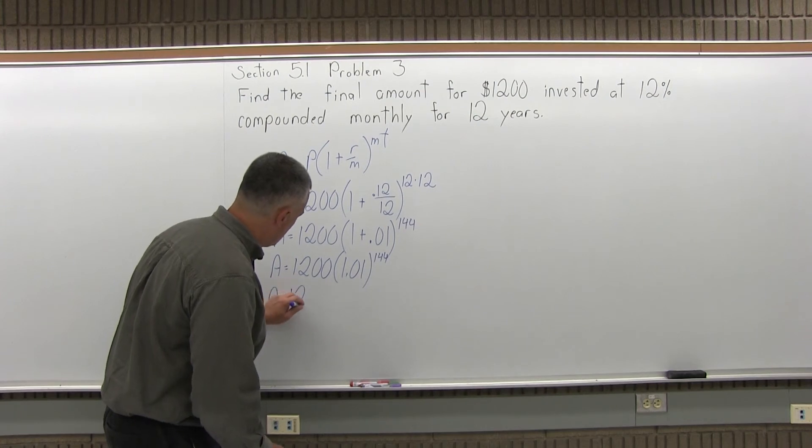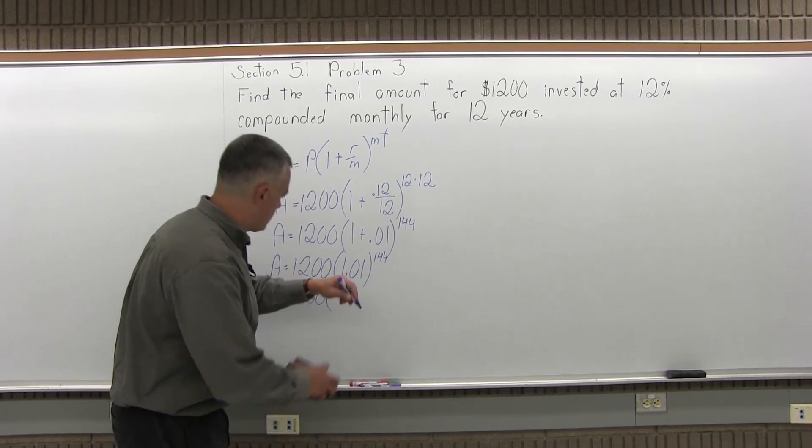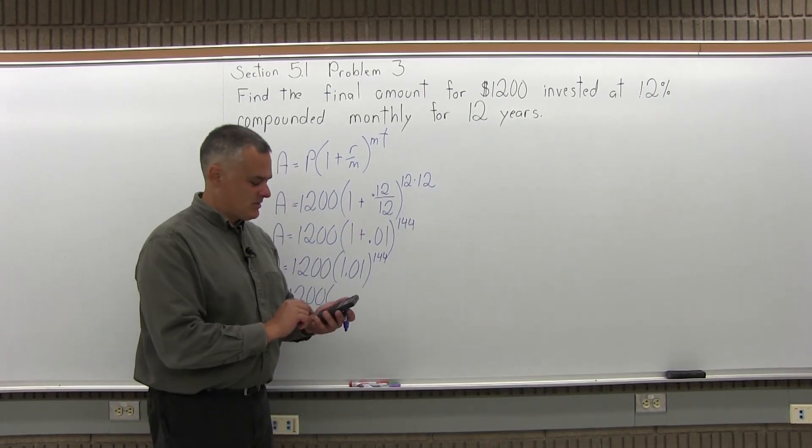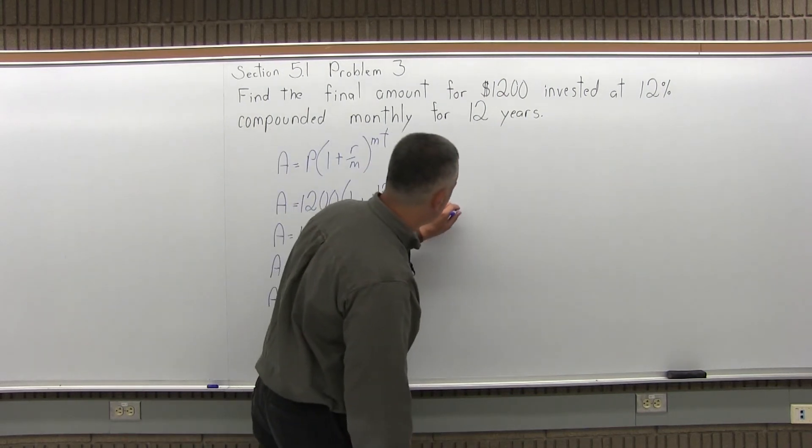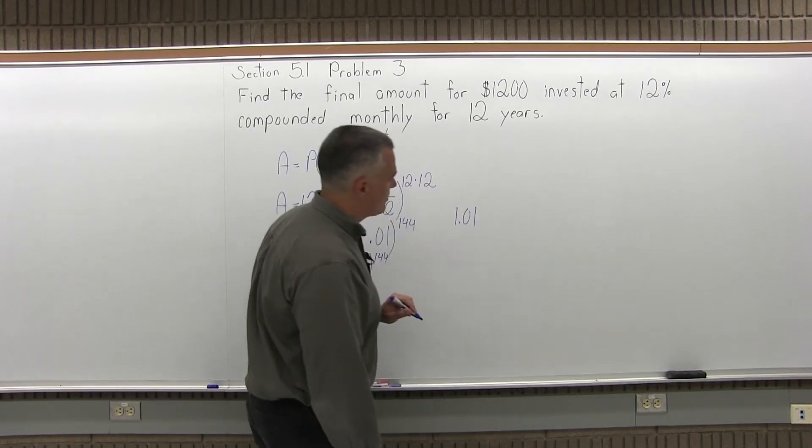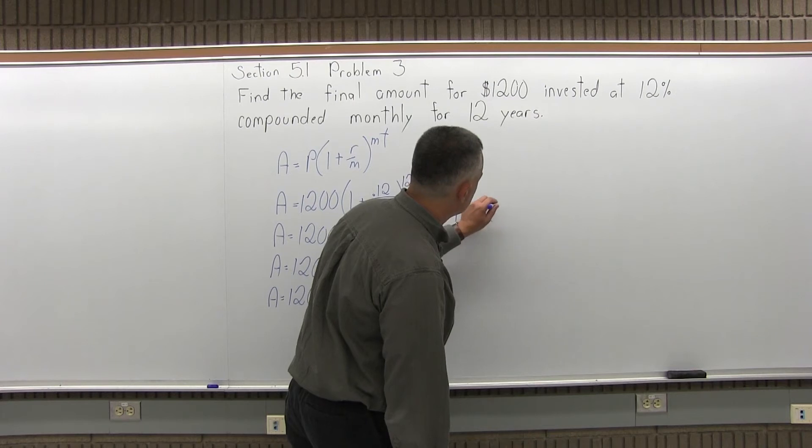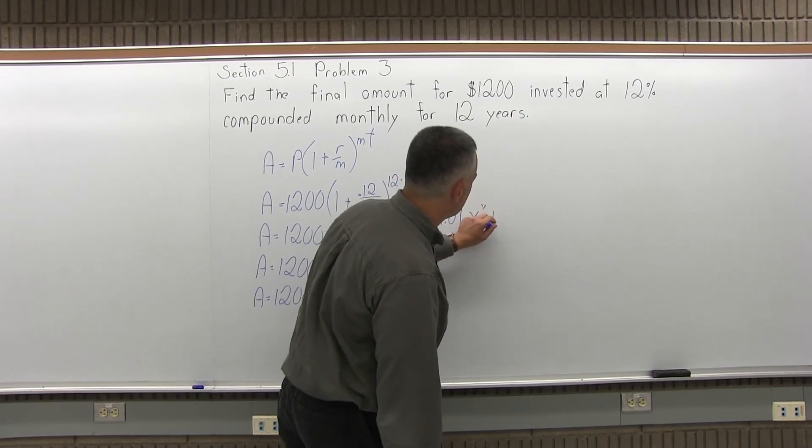You're going to have A equals 1200 times whatever the result of that big huge exponent is. So with my calculator, I'm going to put in the base of 1.01, use my exponent button which on this calculator looks like that.